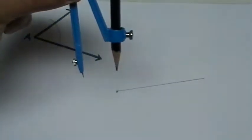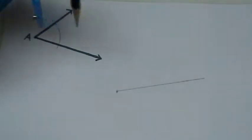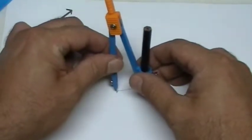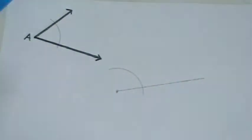I'm not changing the measurement of my compass. It's still the same distance. We're drawing an arc through this initial side of our new angle.